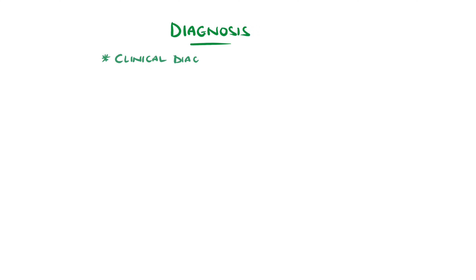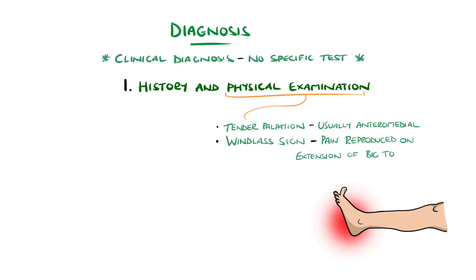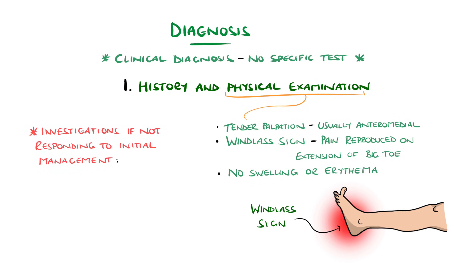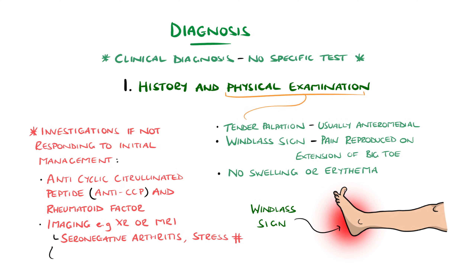A diagnosis is clinical, meaning no specific lab test or imaging is needed, and is instead based on the history and physical exam. A point of tenderness is usually found on palpation, and extension of the big toe can often reproduce symptoms, which is called the windlass sign. Generally, there are no signs of swelling or erythema, and lateral squeezing of the heel should not be overly tender, a finding more suggestive of a stress fracture. In cases where conservative management is not working, further investigations exploring other diagnoses can include testing for rheumatoid factor, anti-cyclic citrullinated peptide or CCP antibodies, and imaging such as x-ray or MRI looking for causes like stress fracture or radiological evidence of spurring that could suggest a seronegative arthritis like psoriatic or reactive arthritis or ankylosing spondylitis.